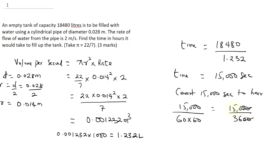Cancel the double zeros. How many 36 are in 150? We get 4, with a remainder, giving us 4 and 6 over 36, which is the same as 4 whole number and 1 over 6 hours. So as easy as that, you can solve this particular question.